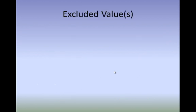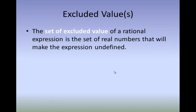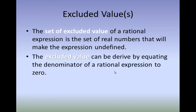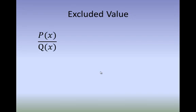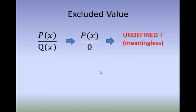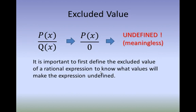So what are excluded values? The set of excluded values of a rational expression is the set of real numbers that will make the expression undefined. The excluded value can be derived by equating the denominator of a rational expression to 0. Values that will make the denominator 0 are excluded values. For example, P of X over Q of X can become undefined when Q of X equals 0, because any number divided by 0 becomes meaningless or undefined. So it's important to define the excluded values of a rational expression to know what values will make the expression undefined.